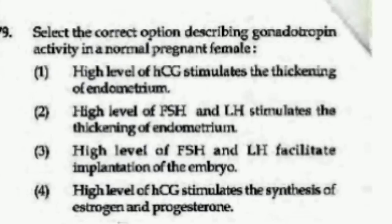Select the correct option describing gonadotrophin activity in a normal pregnant female — options are: high level of HCG stimulates the thickening of endometrium; high level of FSH and LH stimulate the thickening of endometrium; high level of FSH and LH facilitate implantation of the embryo; or high level of HCG stimulates the synthesis of estrogen and progesterone. The right answer is option number 4, High level of HCG stimulates the synthesis of estrogen and progesterone.